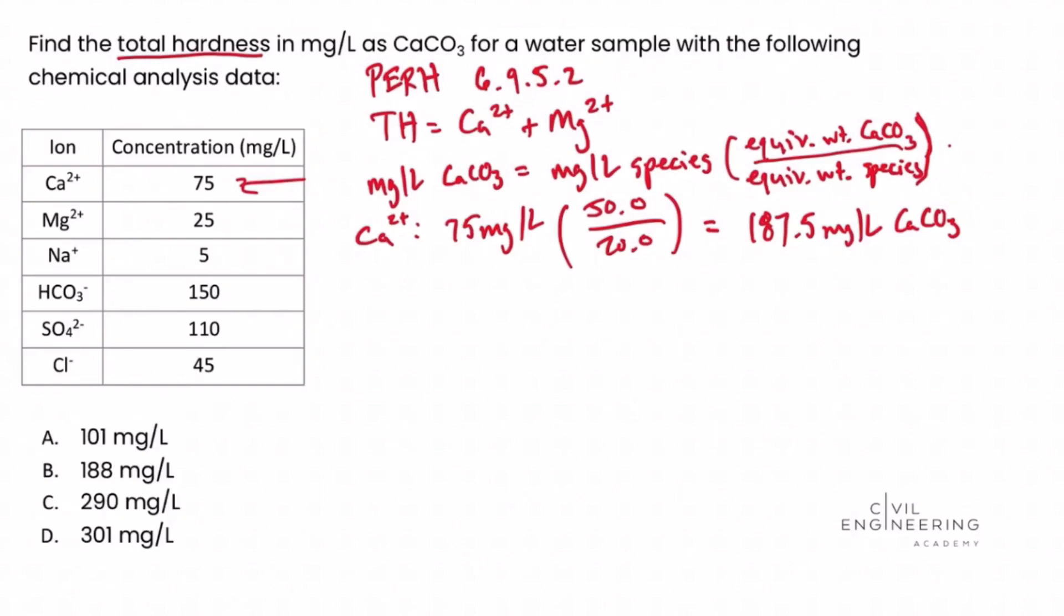Then we need to calculate the total hardness contributed by the magnesium ion. We're given a concentration of 25 milligrams per liter of Mg2+ magnesium ion times the equivalent weight of calcium carbonate, 50.0, over the equivalent weight of the species. In this case, the species is the magnesium ion, and looking in the table, the equivalent weight of the magnesium 2+ ion is 12.2. We carry out this math and get a concentration of 102.459 milligram per liter of calcium carbonate being contributed by the magnesium ion. Again, a basic unit conversion.